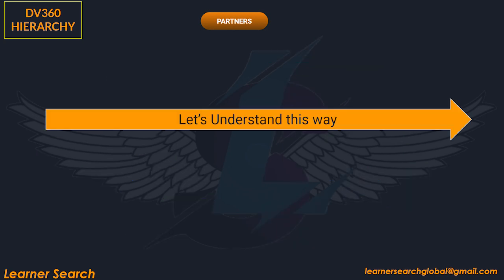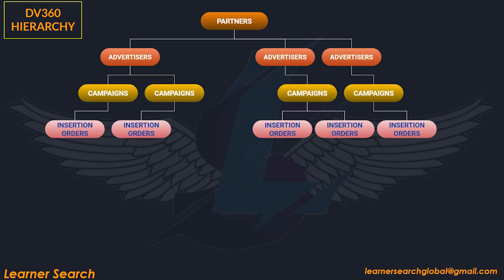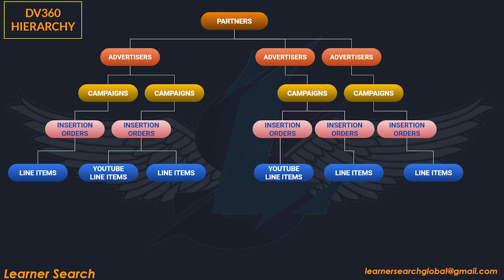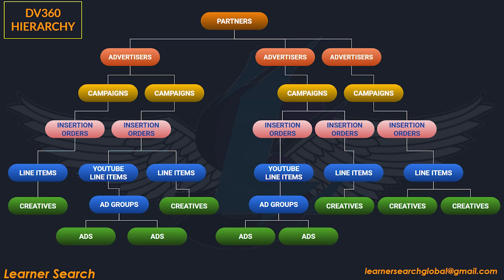Let's understand this way: one partner and three advertisers. Under a partner, multiple advertisers can be created. Each IO holds single or multiple line items, and each line item is assigned with a creative. For YouTube line items, ad groups can be created, and each ad group is assigned with YouTube ads.